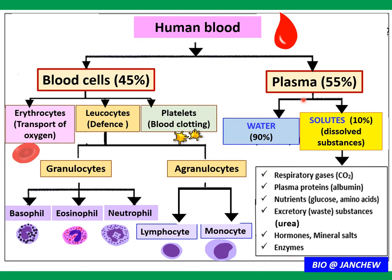The plasma is the liquid part of blood, consisting of 90% water and 10% solutes or dissolved substances. The dissolved substances include respiratory gases, plasma proteins, nutrients, excretory or waste substances, hormones, minerals, salts, and enzymes.